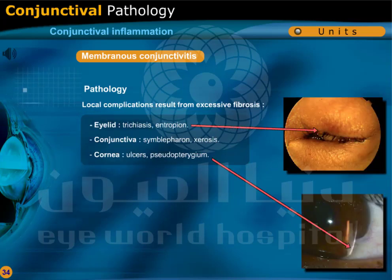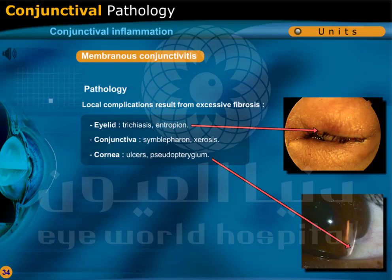Local complications result from excessive fibrosis. In the eyelid: trichiasis and entropion. In the conjunctiva: symblepharon and xerosis. In the cornea: ulcers and pseudopterygium.